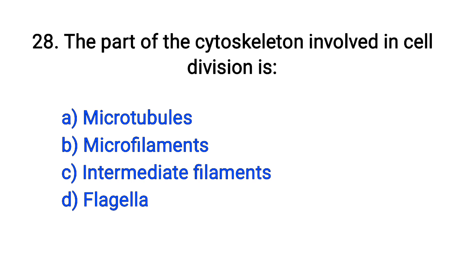Question number 28. The part of the cytoskeleton involved in cell division is: microtubules, microfilaments, intermediate filaments, flagella. The right answer is option A: Microtubules.